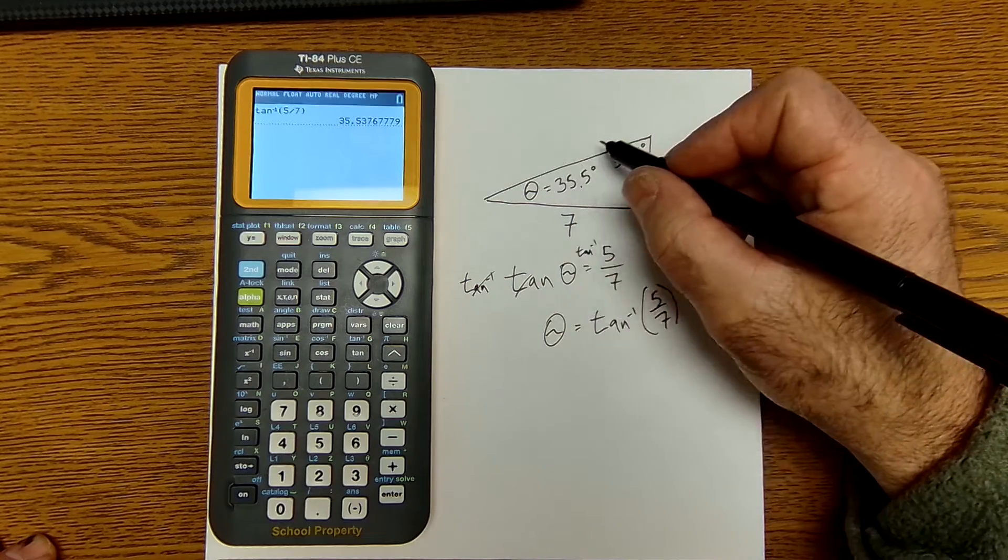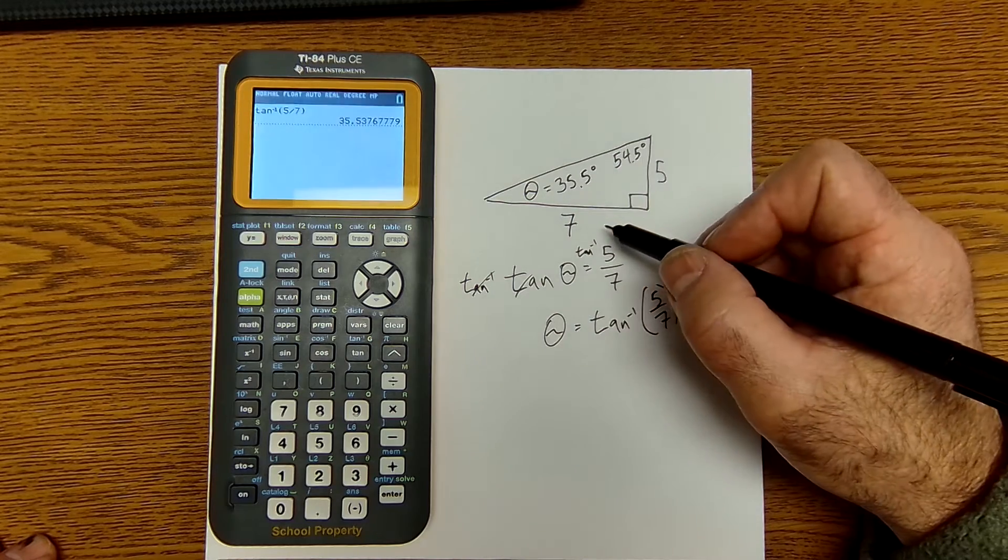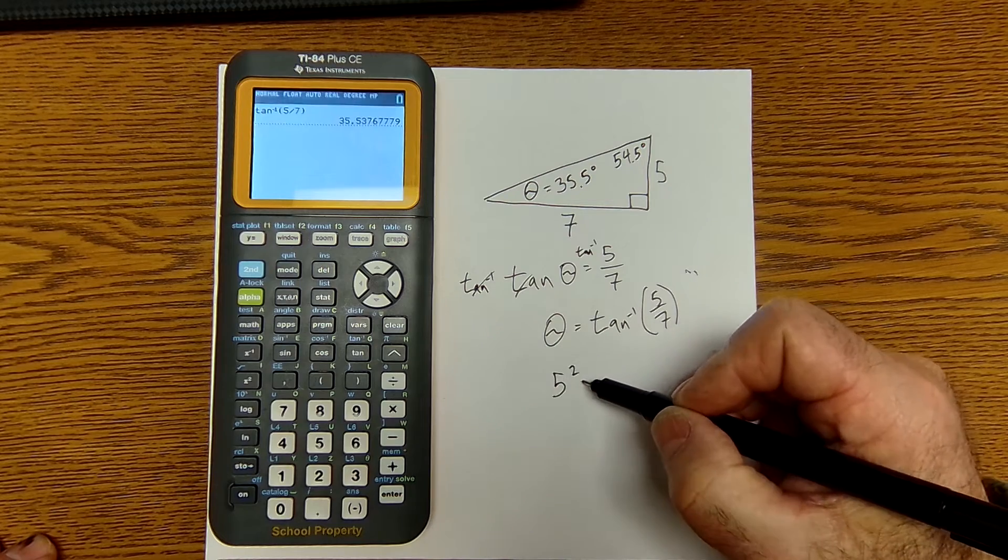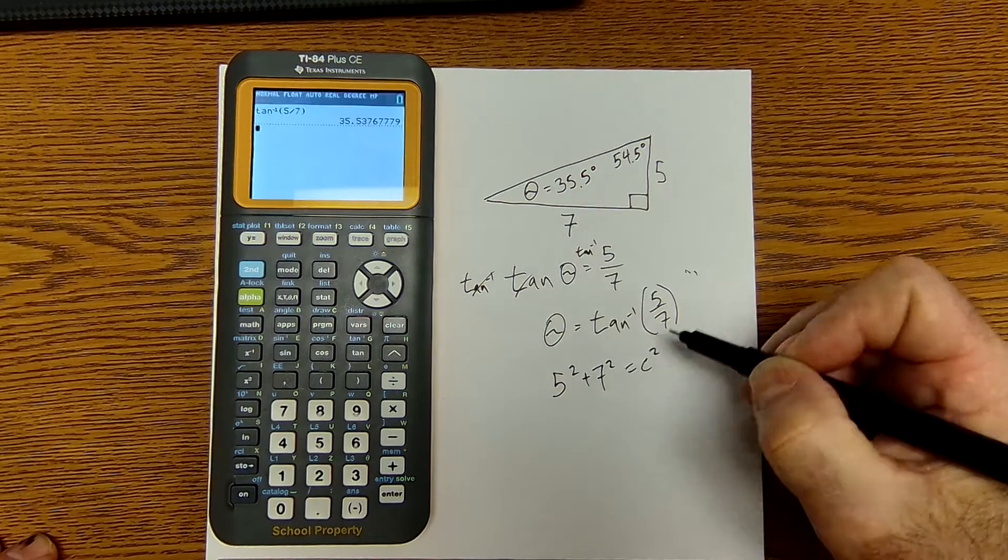And I can find that hypotenuse there by using the Pythagorean theorem. 5 squared plus 7 squared equals C squared.